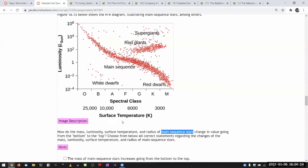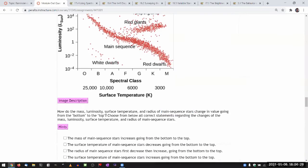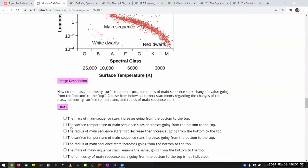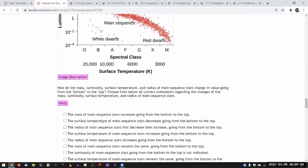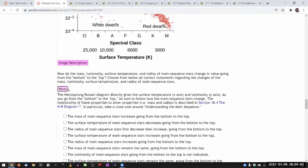So mention all that so that you have that in your head as you're going through. So the first choice says the mass of the main sequence stars increase going from the bottom to the top. Now, in this plot itself, I don't see mass, but I hope it's pointed out in the hint. The relationship of these properties to other properties, like mass and radius, is described in this section.